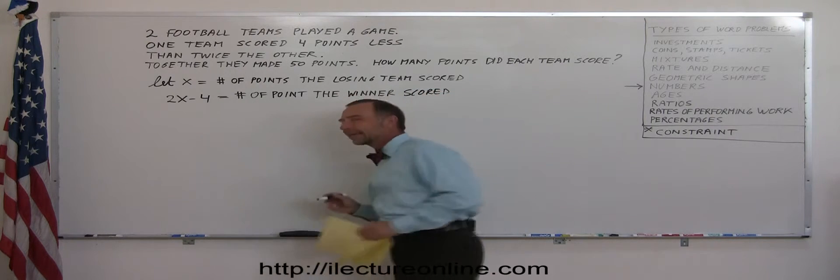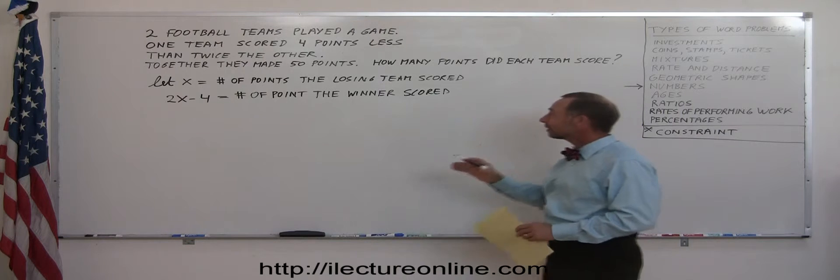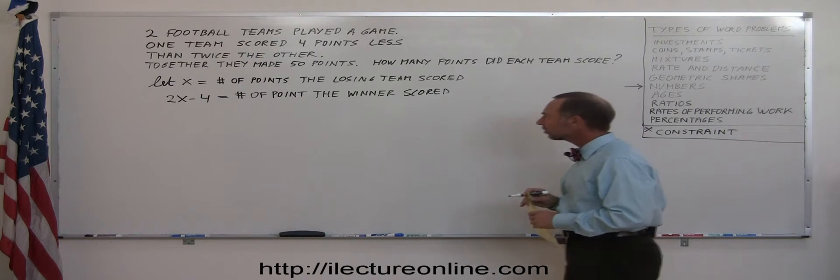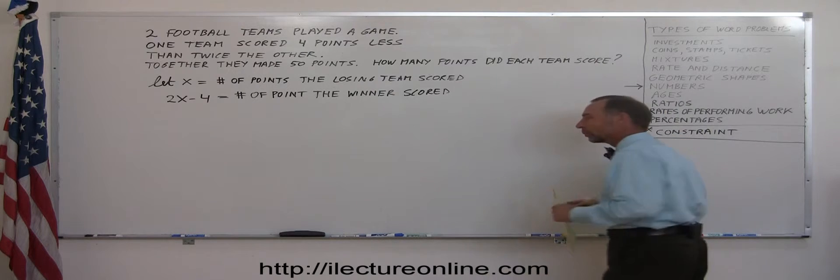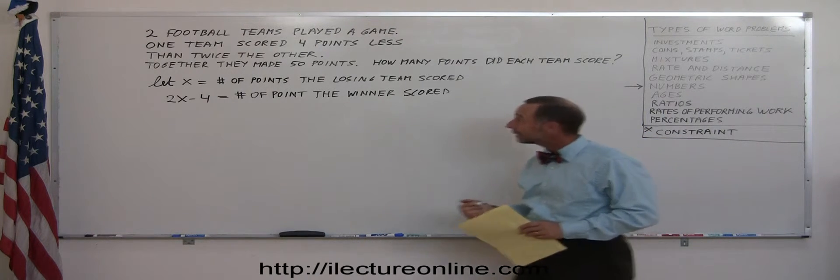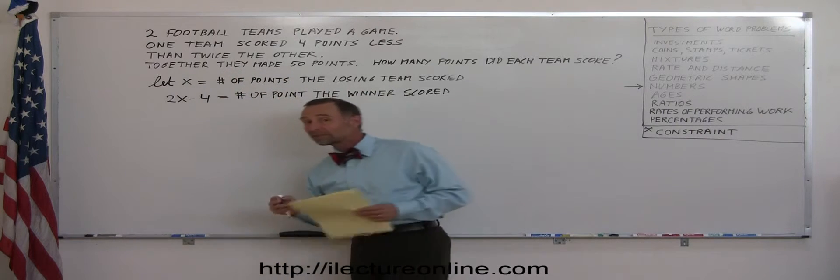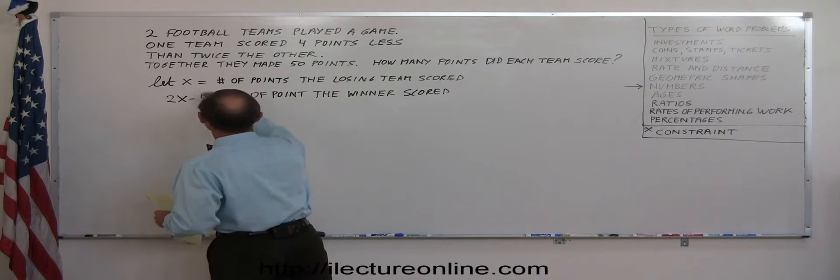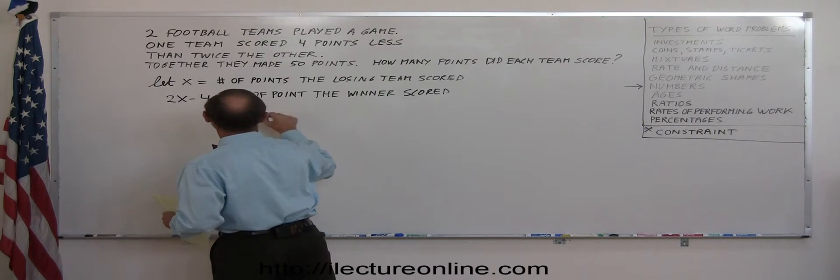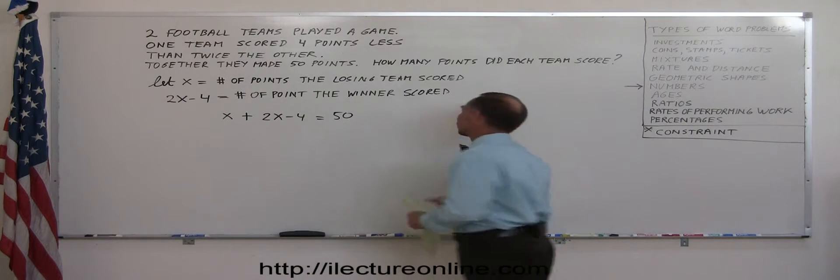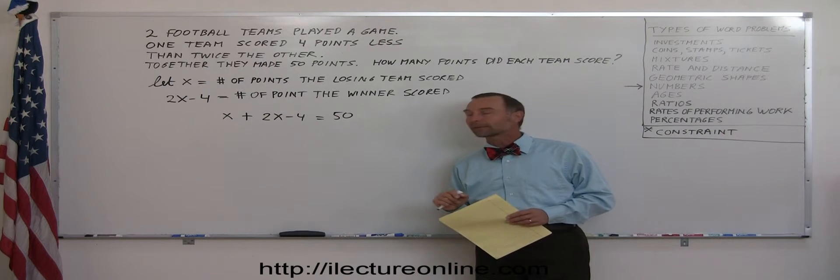I can't emphasize enough to really write down very detailed what each represents. So now we need a constraint. We need some sort of information that allows us to figure out what those numbers are, and they tell us right here that together they made 50 points. That means if we add it up together, that should equal 50. So the number of points that the losing team scored plus the number of points that the winning team scored, that must add up to 50 points. There's our constraint that will allow us to solve the problem.